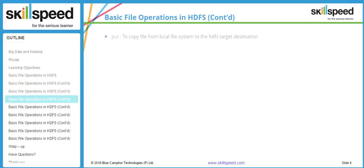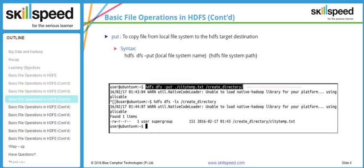The next command is the put command. As a developer, you often want to upload your data into Hadoop so you can analyze it. You can use the put command for this. The syntax is: hdfs dfs -put, then the file path in the local file system, then the destination path in the Hadoop directory. Here I typed: hdfs dfs -put ./city_temp.txt, with that file in my current working directory in Linux, and the destination is the directory we just created called create_directory.